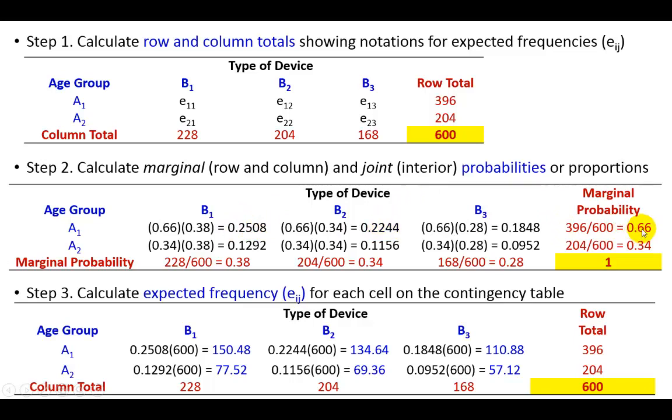So, for this guy here, it's going to be 0.66 multiplied by 0.34. And, for this one here, it is 0.34 multiplied by 0.28. So, this is how we get the joint probabilities, as it were. And these represent the expected percentage of outcomes in each cell if, in fact, the two variables are independent. So, for example, we should expect about 25% of the surveyed sample of 600 respondents to be customers aged less than 30 with preference for Apple device.